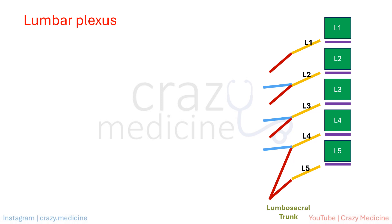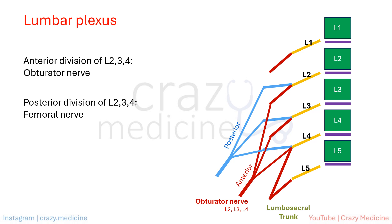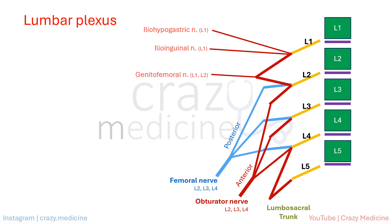The anterior division of L2, L3, and L4 forms the obturator nerve, and the posterior division forms the femoral nerve — meaning both have the same nerve root value. There are other nerves from both anterior and posterior divisions. The ilioinguinal nerve, iliohypogastric nerve, and genitofemoral nerve arise from the anterior division, and the lateral femoral cutaneous nerve arises from the posterior division. This summarizes the lumbar plexus.